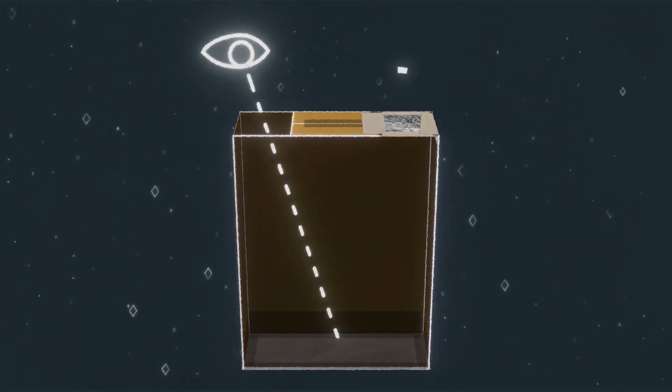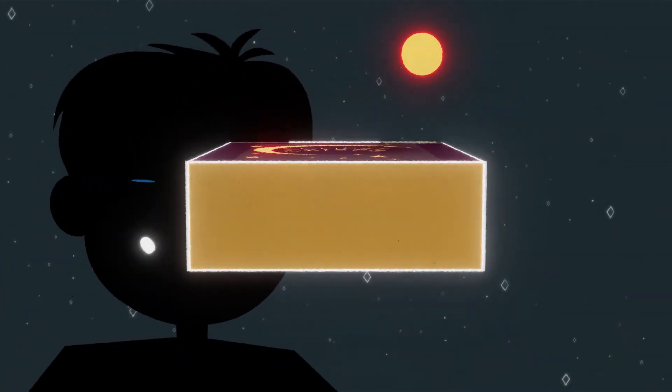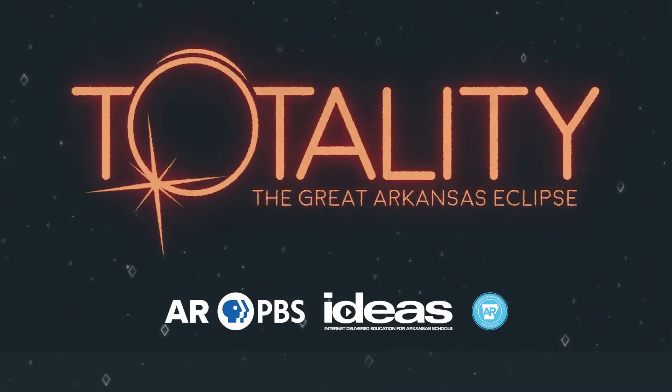You need to leave this side open so you can look through it, because this is where the eclipse is going to be shining through. The way you can see it, you're going to be facing away from the eclipse. You're just going to look through here and you should be able to track it through this hole.